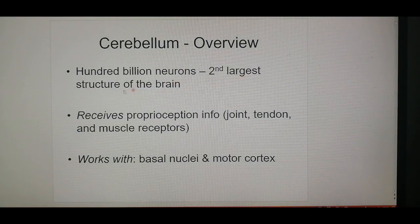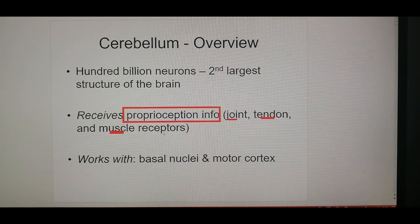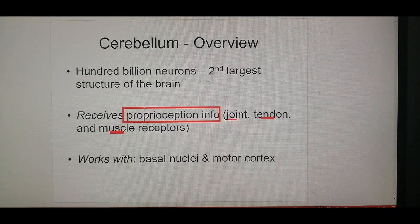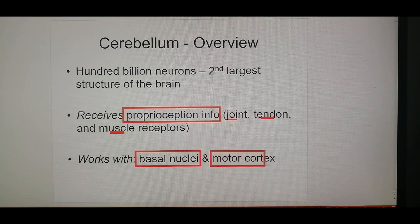What is the cerebellum? The cerebellum is the second largest structure of the brain with 100 billion neurons. This structure receives proprioception — a very important point. Proprioception encompasses joint, tendon, and muscle sensory information regarding movement or while stationary. All of this is lumped together under proprioception and sent to the cerebellum. It works together with the basal ganglia and the motor cortex.